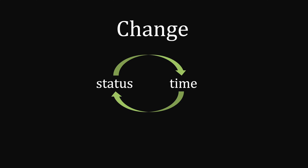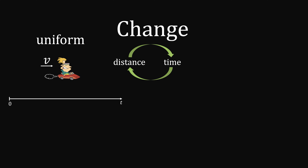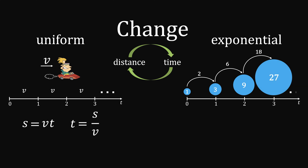If we know how status changes with time, we can use that to figure out one from the other. For example, the relationship between distance and time. The simplest case is uniform motion, where the per-unit-time change of distance is constant. In that case, the relationship is straightforward, and we can easily back out time from distance. But another common case is the exponential one, where the per-unit-time change is no longer constant — in fact, it can be greater and greater, or smaller and smaller.